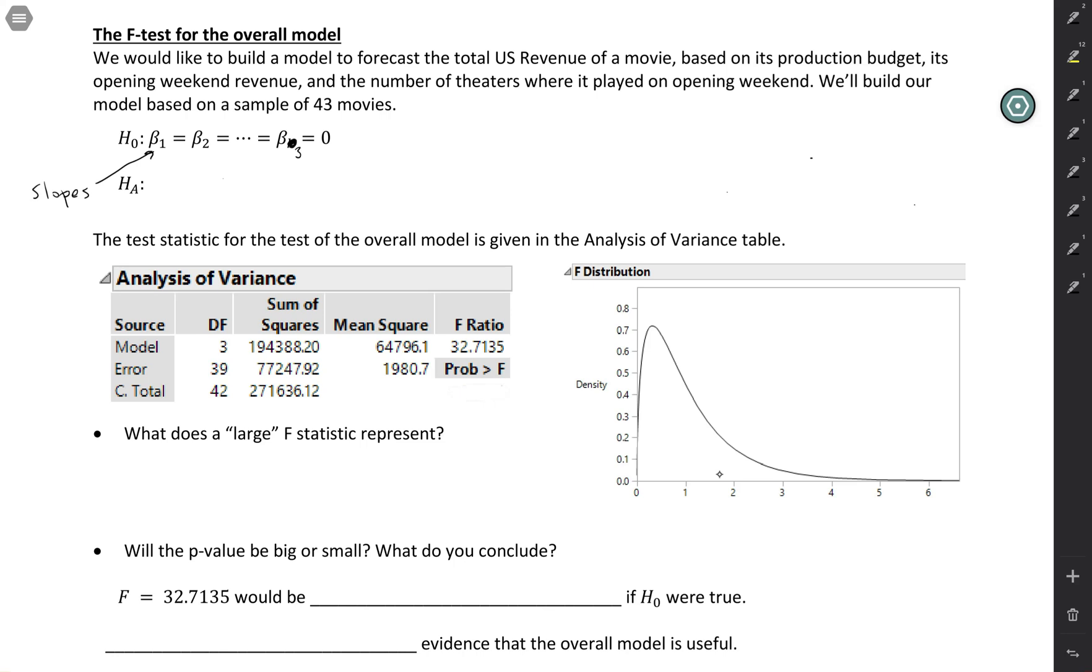And the null being equal to zero is another way of saying that none of the variables are useful, because if the slope is equal to zero for a particular variable, that means it doesn't matter what you plug in for that variable, it's not going to affect your prediction. So that variable would not be useful if its slope is equal to zero.